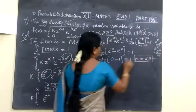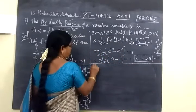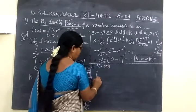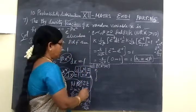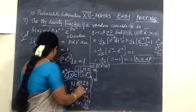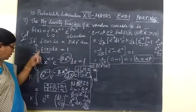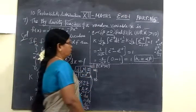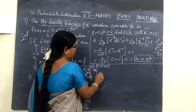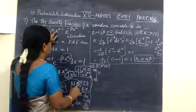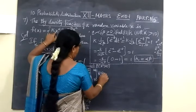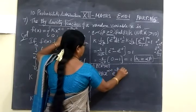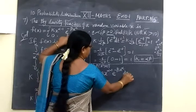For the second part, we have to find P(X greater than 10). The limit is now 10 to infinity. We set up the integral from 10 to infinity of f(x) dx. Since K equals αβ, f(x) equals αβ·x^(α-1)·e^(-β·x^α) dx.